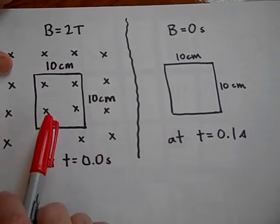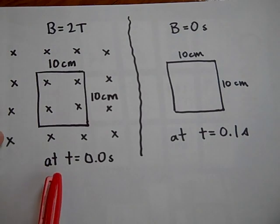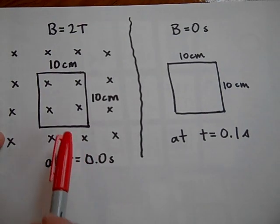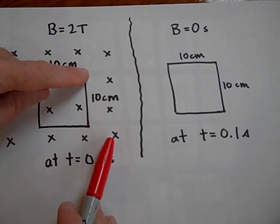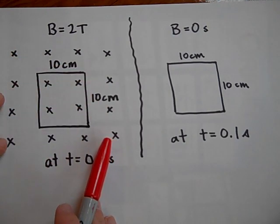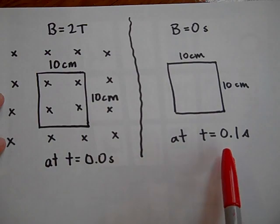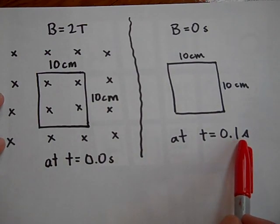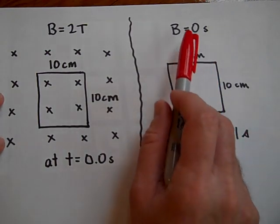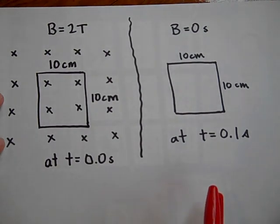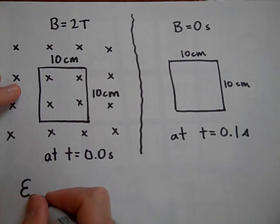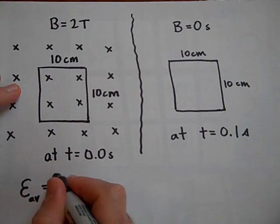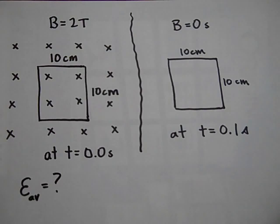This is the same loop at two different times. At time t equals zero, we have a magnetic field of 2 Teslas. This loop is a square loop — 10 centimeters by 10 centimeters. In a time of 0.1 seconds, that same loop will have no magnetic field. The question is: what will be the average EMF induced? Go ahead and pause and see if you can get that.